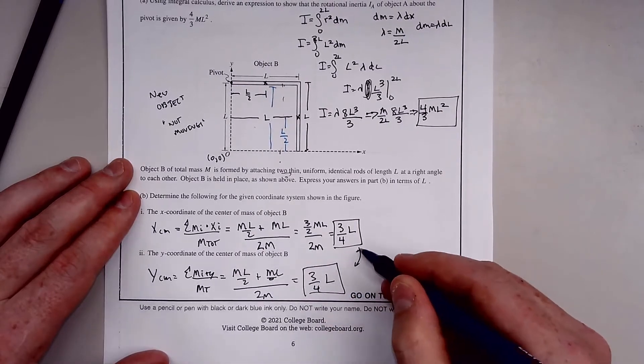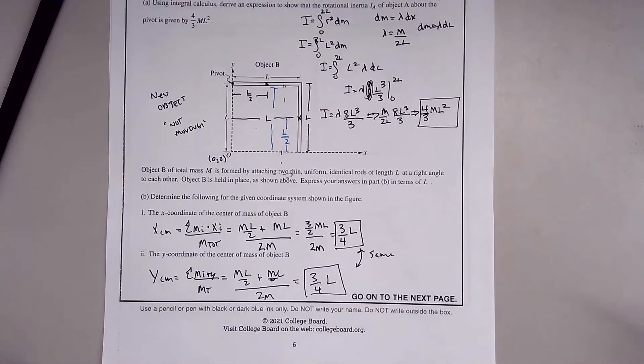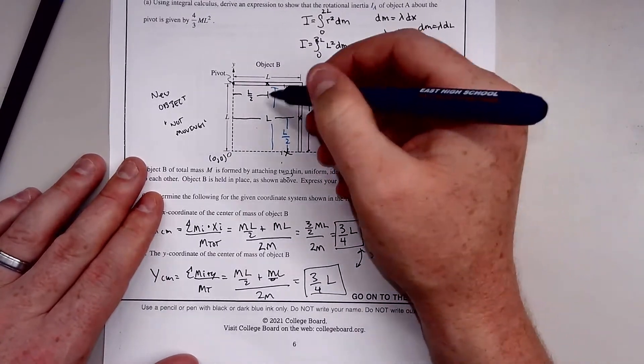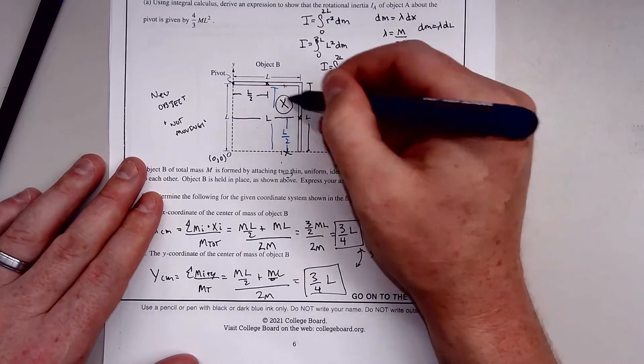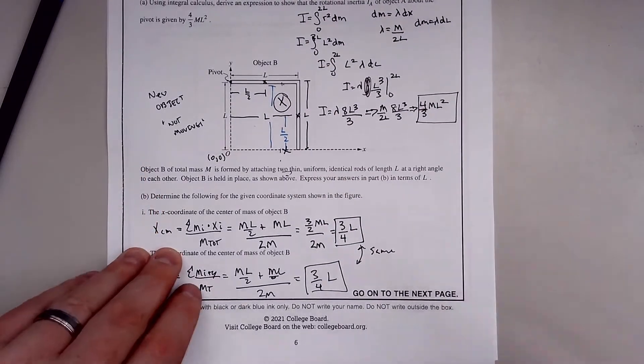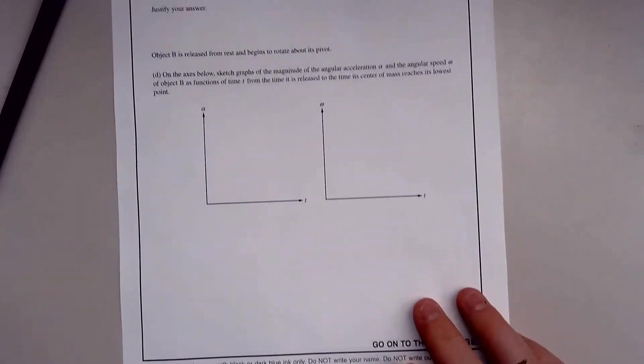This mass is at height L/2, and this mass is at height L. It's the exact same calculation divided by 2M that we just did. So 3/4 L. They are the same. That puts our center of mass at 3/4 L, 3/4 L, which is somewhere right in there.